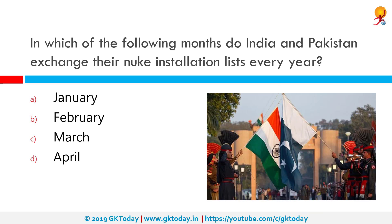In which month do India and Pakistan exchange their nuclear installations lists every year? This is done in January. The agreement pertaining to nuclear installations, signed on December 31, 1988 and entering into force on January 27, 1991, entails that the two countries inform each other of nuclear installations and facilities on 1st January of every year.